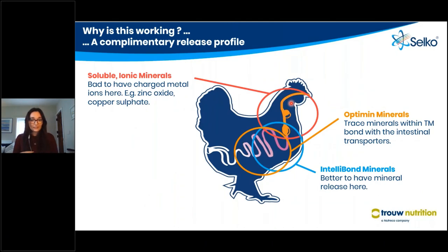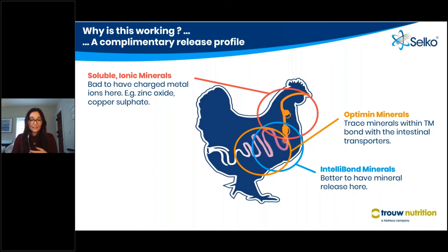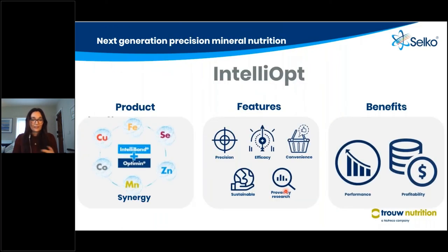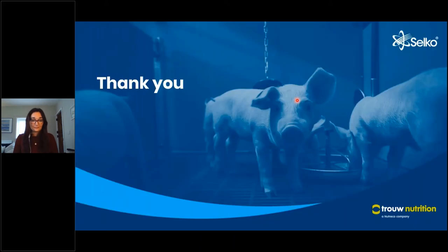The reason this works is that Optimin and Intellibond have slightly different release profiles. Intellibond solubilizes in the stomach and release and absorption mostly happen in the early GI tract and small intestine, whereas Optimin provides consistent release and absorption throughout the whole intestinal tract. These two complementary modes of action are well established. The IntelliOpt concept is the next generation in precision mineral nutrition, providing synergy between different trace mineral sources — precision, efficacy, convenience, sustainability, and proven research — delivering performance and profitability.